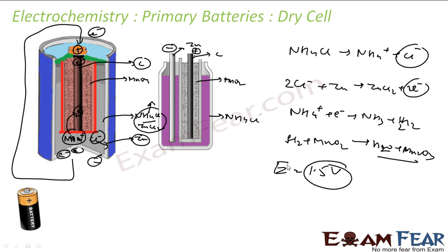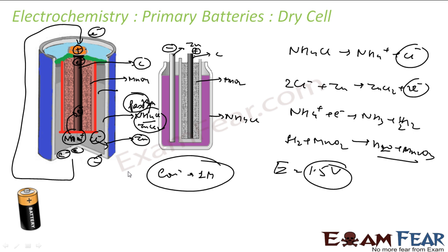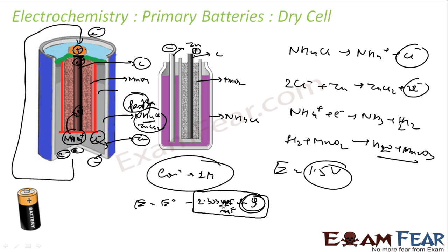The potential of the dry cell is 1.5 volts. Since the NH4Cl is in paste form, not an aqueous solution, the concentration is almost 1 molar. Using the Nernst equation — E = E° - (2.303RT/nF) × ln Q — since concentration is 1, Q becomes 1, the log term becomes 0, and the voltage does not drop. The concentration of products to reactants in paste form remains almost 1, so the voltage stays constant.